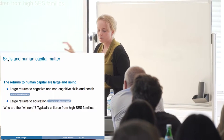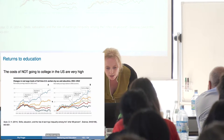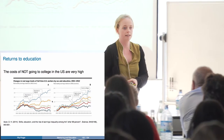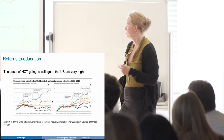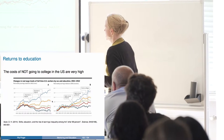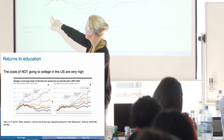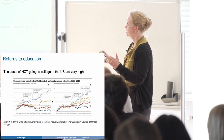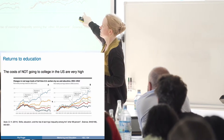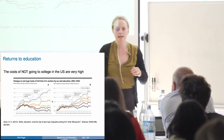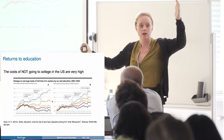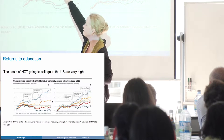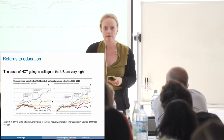We know there are large returns to skills, but we also know there are large returns to education, and the return to education has been increasing over time. This is a graph from a Science paper by David Autor from 2014, for the US. Wages are normalized to one in 1964 and then you can see how relative wages develop until 2012, for women and for men. Returns to education are increasing, particularly for the highest education category — individuals that have more than a bachelor's degree.